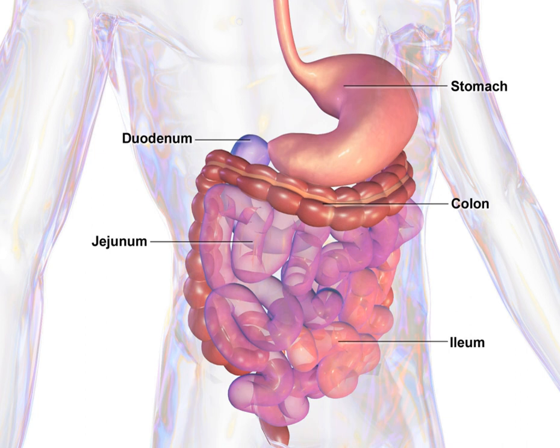Some small bilaterians have no anus and dispose of solid wastes by other means, for example through the mouth. The human gastrointestinal tract consists of the esophagus, stomach, and intestines, and is divided into the upper and lower gastrointestinal tracts.